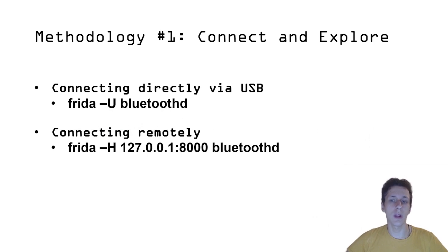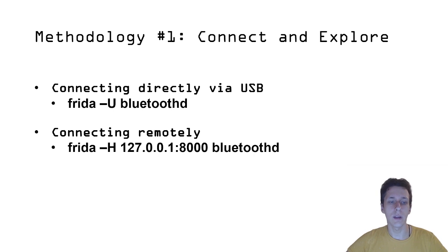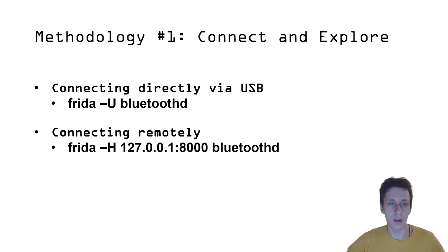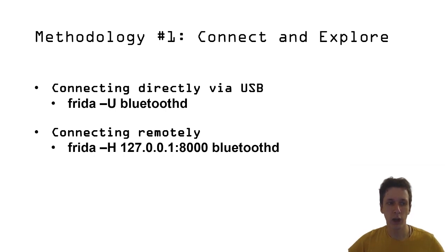Methodology one: connect and explore. You can connect to the phone via two methods: directly via USB using the -U flag, or connecting remotely using the -H flag and providing the IP address and port of the server running on the device. To demonstrate the first method, we will be using a PC application because the device sadly died right before the demonstration.